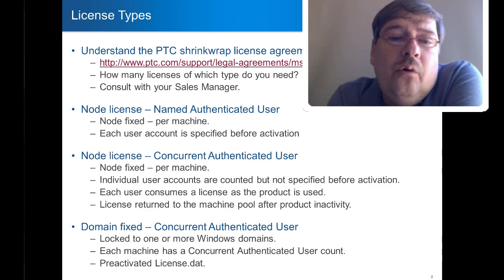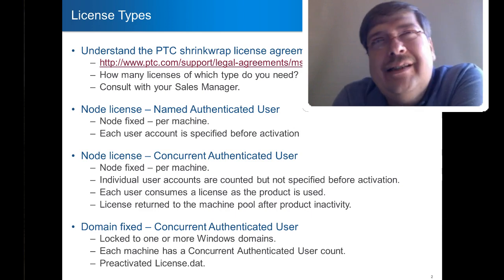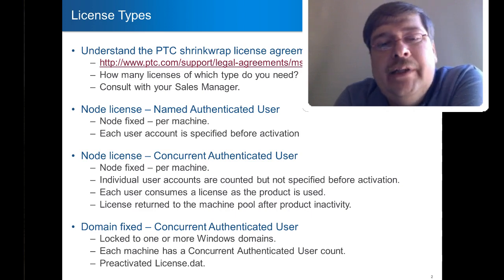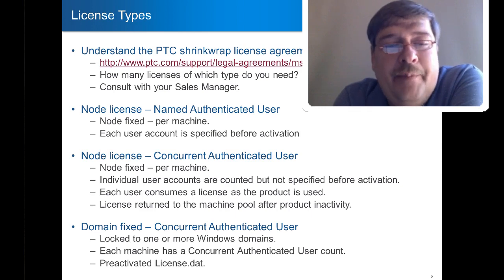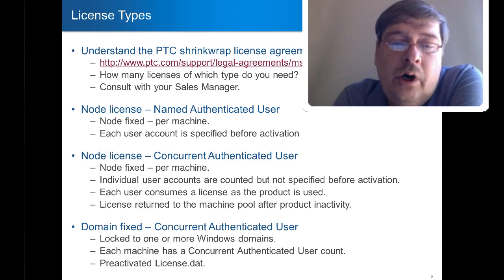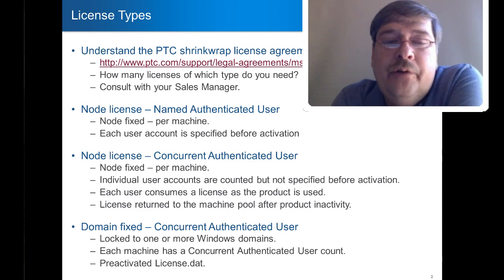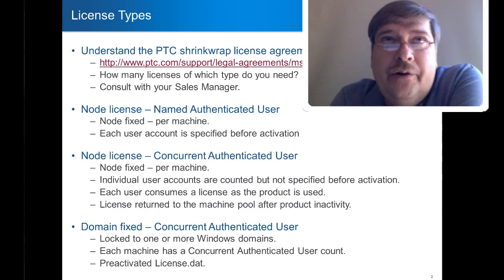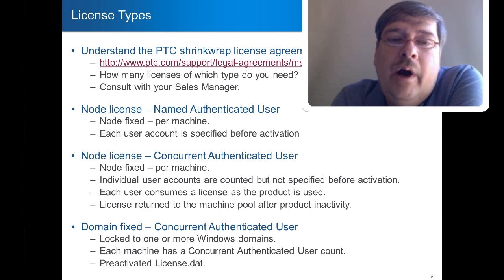We do provide a slight variation on node-fixed, which I'll describe as a secure site license. It's Windows NT domain-fixed, Active Directory domain-fixed. You can lock an activation to one or more physical machines that are a member of the same domain. Each machine will have a concurrent user count, and we will provide you with a pre-activated license.dat file. In other words, there is activation involved, but we don't require any kind of round trip to a server. You do it beforehand, grab this license.dat, and use it during installation.